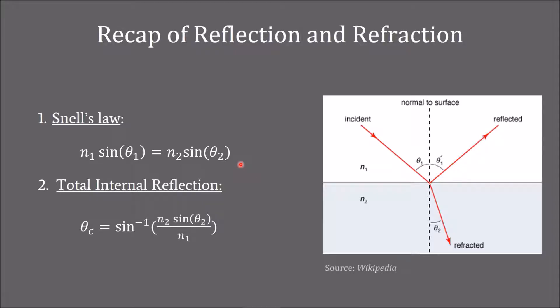Now let's have a recap of the basic laws concerning reflection and refraction. First is Snell's law, which gives the relation between the angle of incidence to the angle of refraction when an electromagnetic wave is traveling from medium 1 to medium 2. Second is total internal reflection, which says that a light wave might get reflected back if it is traveling from a denser medium to a lighter medium, given that its angle of incidence is greater than a certain critical angle.